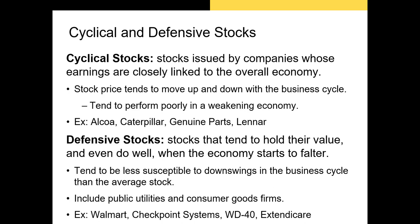The alternative to cyclical stocks are defensive stocks — stocks that tend to hold their value and even do well when the economy starts to falter. These are stocks with low betas that sell products people still need during a recession. Discount grocery stores like Walmart and Kroger often thrive during contractionary periods and are historically viewed as defensive stocks. Producers of non-durable home goods like WD-40 are also viewed as defensive stocks. The big takeaway: cyclical stocks outperform defensive stocks during bull markets, and defensive stocks outperform cyclical stocks during bear markets.